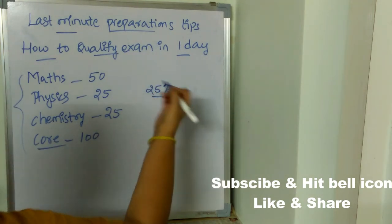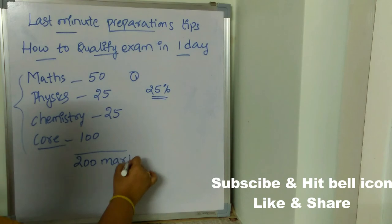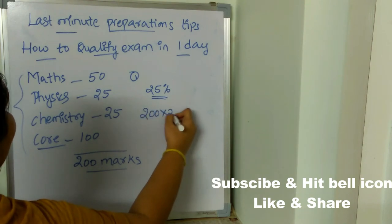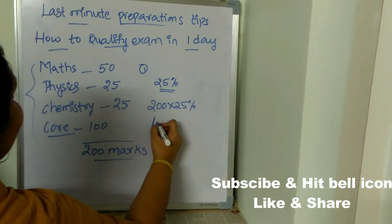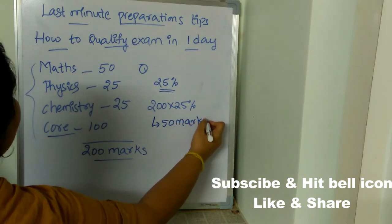Just the qualifying mark is 25%. The total paper is going to be for 200 marks. Out of 200 marks, 25% is 50 marks. So you need to get 50 marks in order to qualify.